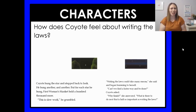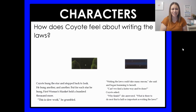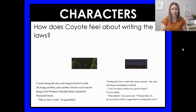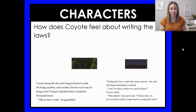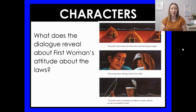How does Coyote feel about writing the laws? Let's re-read: 'Coyote hung the star and stepped back to look. He hung another and another, but for each star he hung, First Woman's blanket held a hundred thousand more. This is slow work, he grumbled.' Remember, he was kind of complaining. Then: 'Can't we find a faster way and be done?' So when we're thinking about Coyote, he's kind of grumbling and complaining about it and really just wants to get things done. Coyote is feeling kind of bored or impatient — he wants to do it, but he wants it to be done.